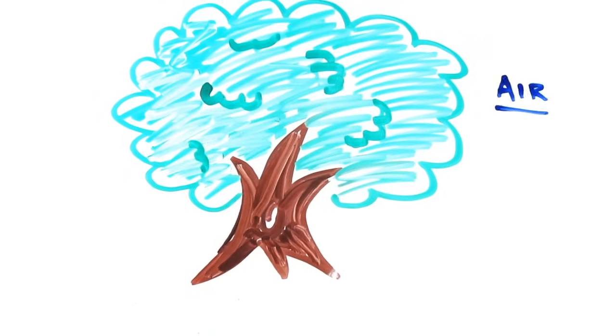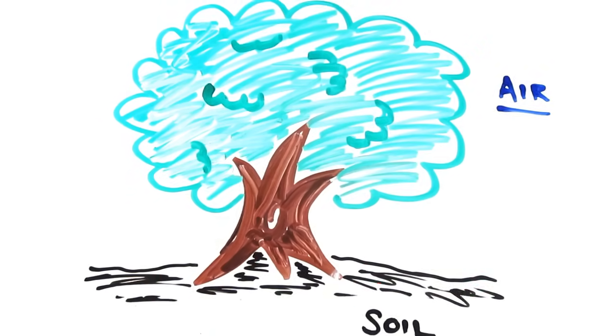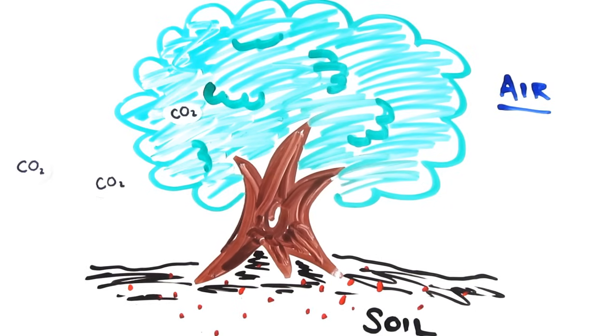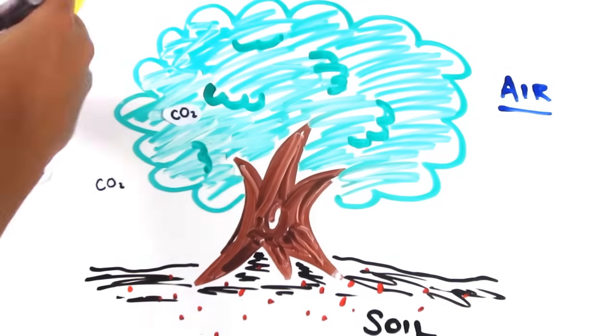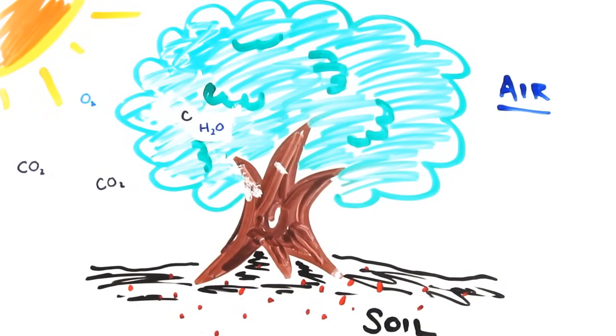Trees? They actually grow out of the air, not the ground. Though they receive some minerals from the soil, the carbon dioxide from air goes into the tree and with the help of the sun removes the oxygen. This carbon is left with water to create the substance of the tree.